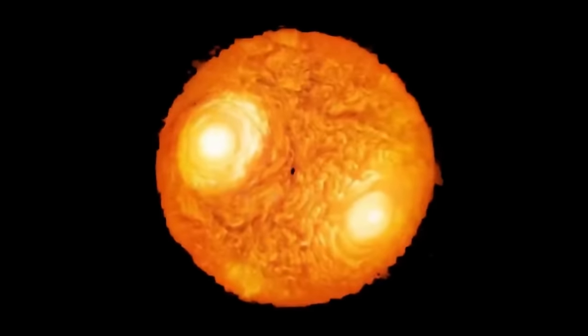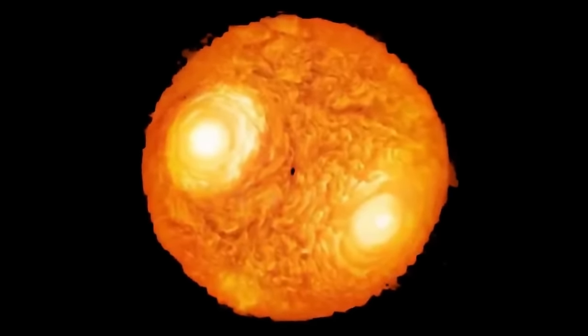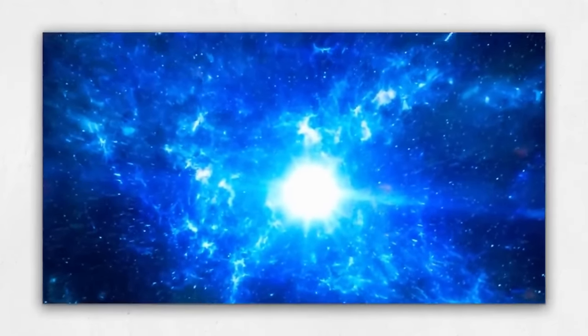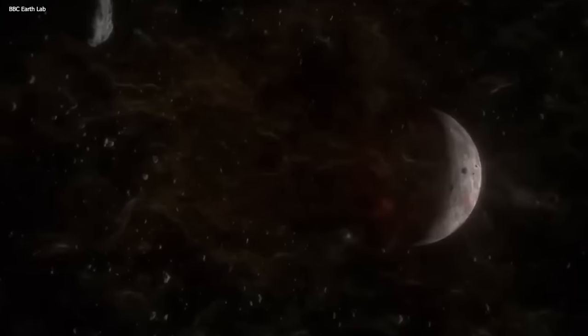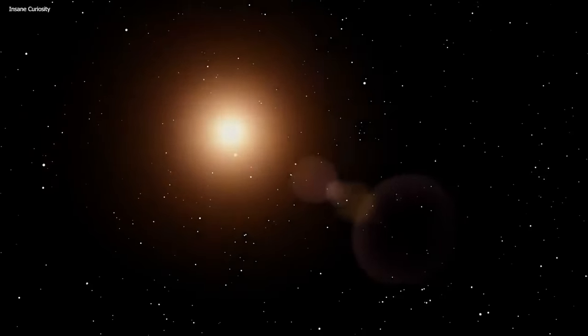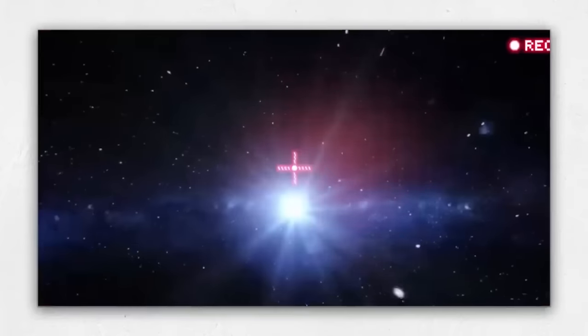The varying brightness of Betelgeuse stems from multiple factors, including its size, temperature and distance from Earth. This fluctuation in luminosity is a result of the star's natural cycles and characteristics. Over a period of slightly more than five years, Betelgeuse experienced significant fluctuations, posing intriguing challenges and generating scientific interest in understanding these variations.